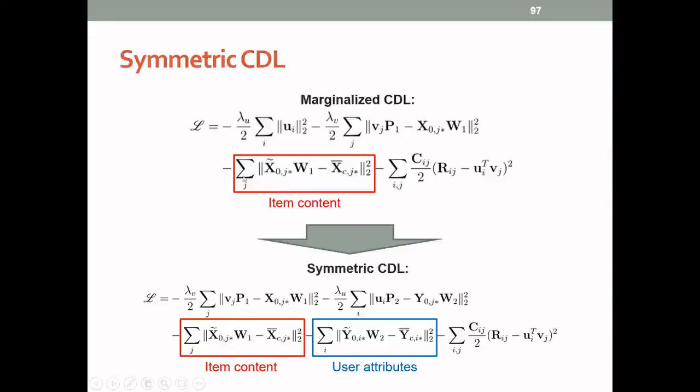And let's say that this is the asymmetric version where we only have the one deep learning component for the item content. And in the symmetric version will have another deep learning component for the user attributes. And the optimization process of learning the parameter would be the same as before.